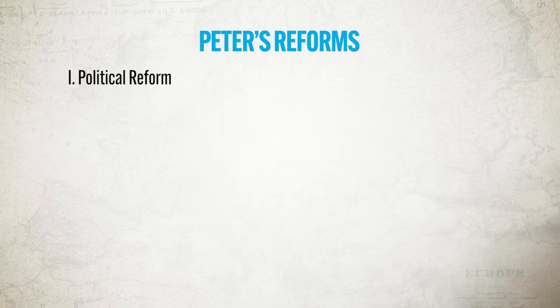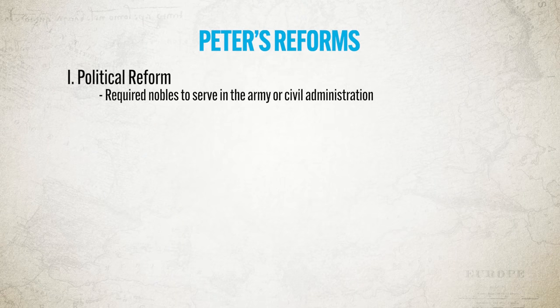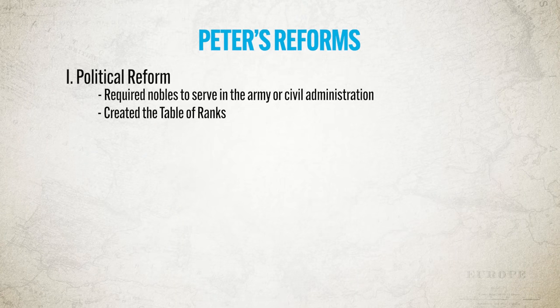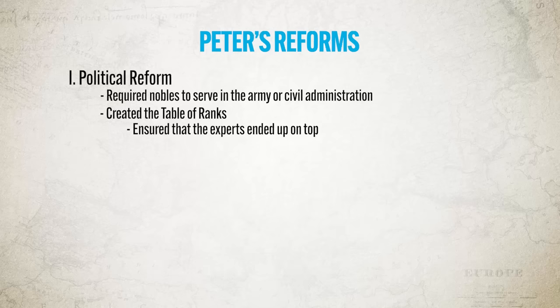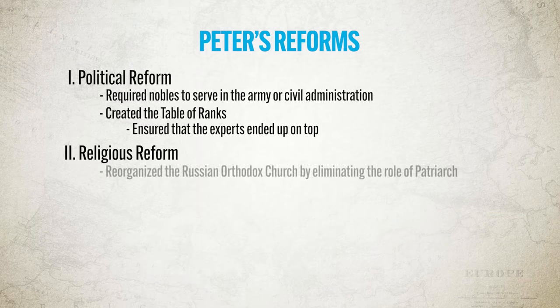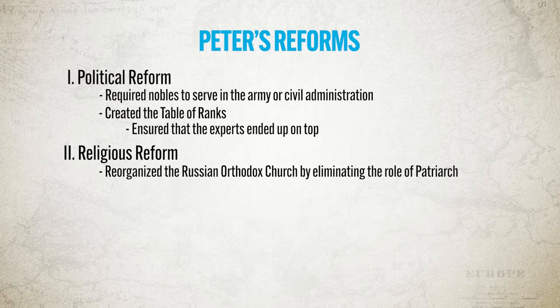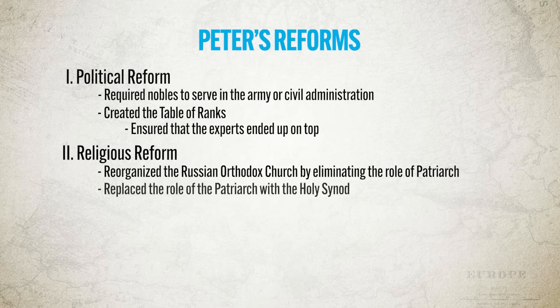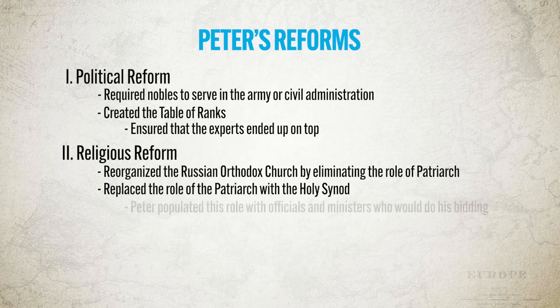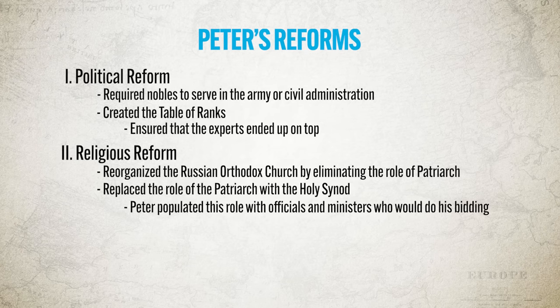Here are some of the reforms Peter introduced to modernize Russia while consolidating power under himself. First, Peter introduced political reform. He required nobles to serve in the army or the civil administration through a system called the Table of Ranks, which meant that experts ended up on top — essential to a modern government and key to reducing the power of the nobility. Second, he introduced religious reform, reorganizing the Russian Orthodox Church by eliminating the role of Patriarch and replacing it with the Holy Synod, populated with officials who would do Peter's bidding.